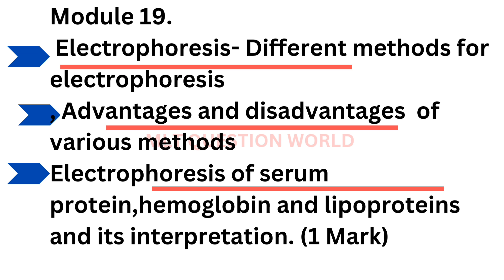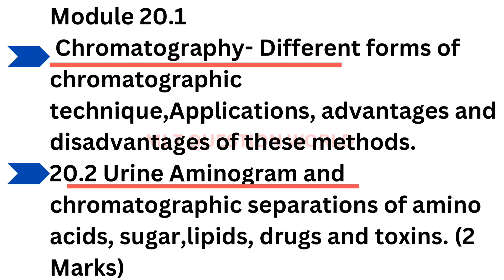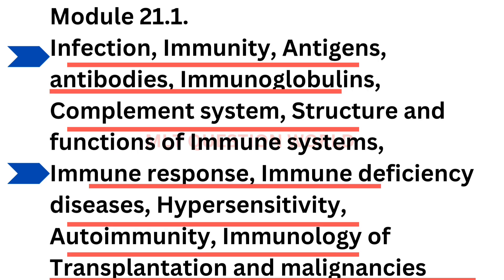Electrophoresis — different methods of electrophoresis, advantages and disadvantages, electrophoresis of serum protein, Hb, and lipoproteins, and their interpretation. Then chromatography — different forms, applications, advantages and disadvantages, then urine aminogram, separation of amino acids, sugars, lipids, etc.